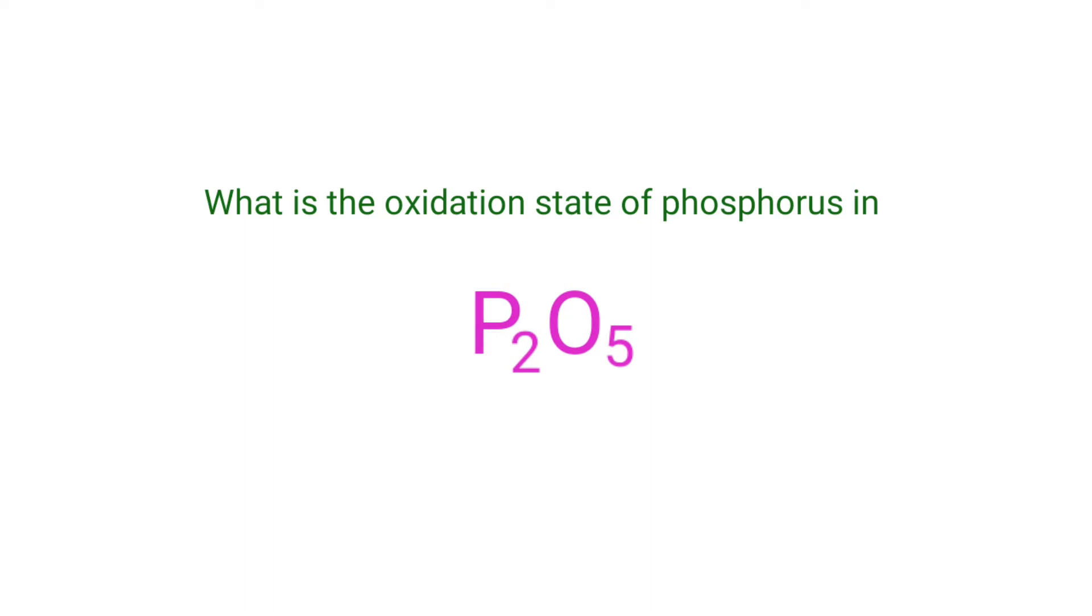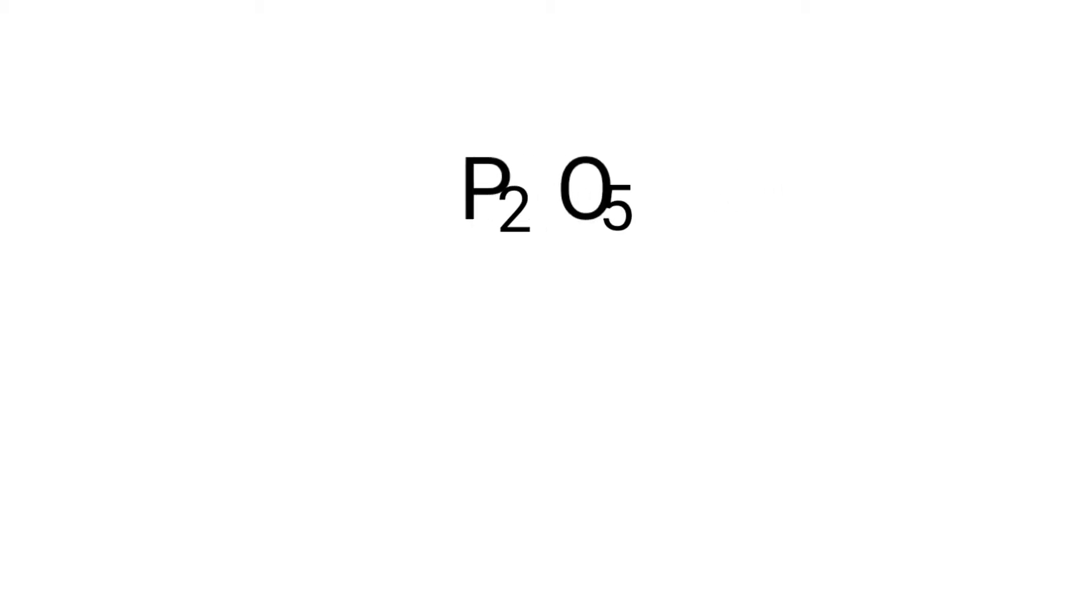What is the oxidation state of Phosphorus in Phosphorus pentoxide? We can use the oxidation number rules to determine oxidation numbers. Phosphorus pentoxide is a neutral compound with overall oxidation number 0.